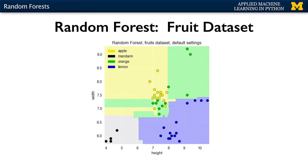Here's an example of learning a random forest on the fruit dataset using two features: height and width. The training data is plotted with height on the x-axis and width on the y-axis, with four categories of fruit to be predicted. Because the number of features is restricted to just two, the randomness comes mostly from bootstrap sampling. The decision boundaries have the box-like shape associated with decision trees, but with additional variation to accommodate local changes in the training data, showing increased complexity compared to a single decision tree.